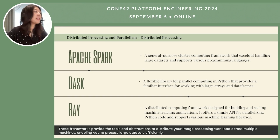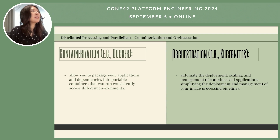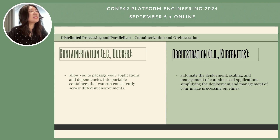Containerization and orchestration are two technologies that can simplify the deployment and management of an image processing pipeline. Containerization using Docker allows you to package your application and dependencies into portable containers. These containers can run consistently across different environments, ensuring reproducibility and eliminating compatibility issues. Orchestration using Kubernetes automates the deployment, scaling, and management of containerized applications.